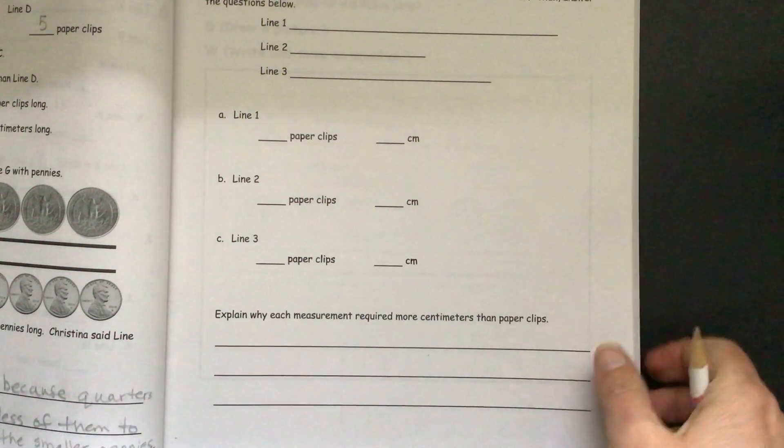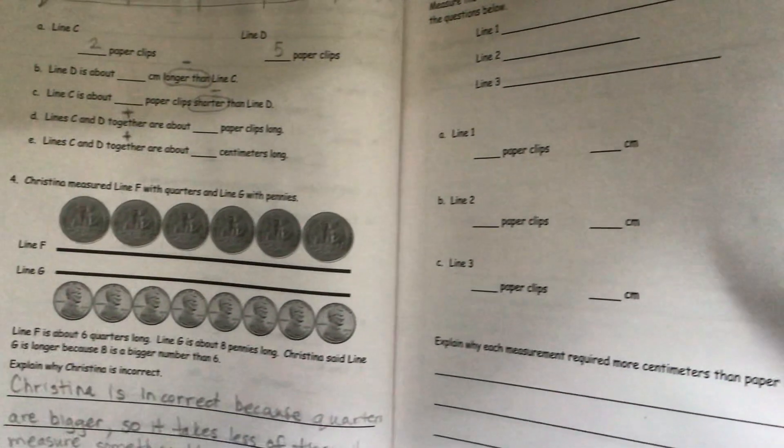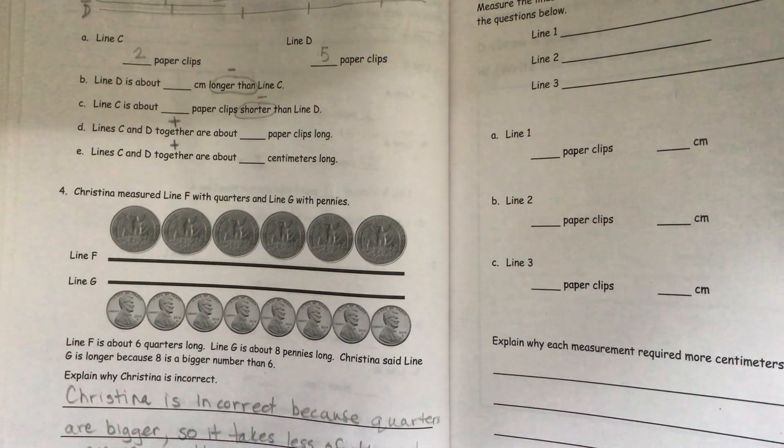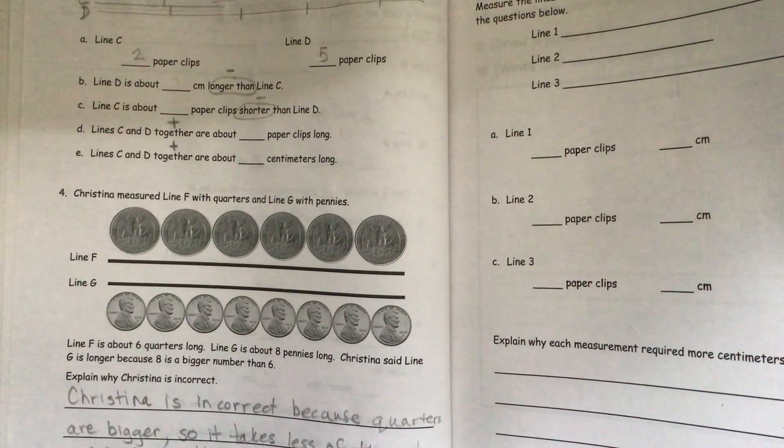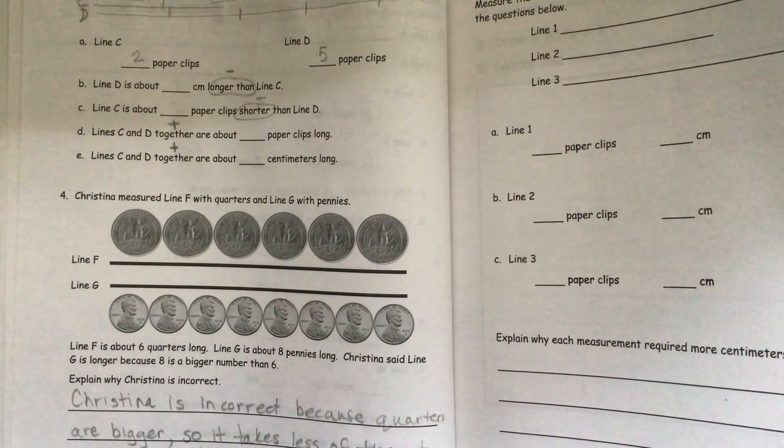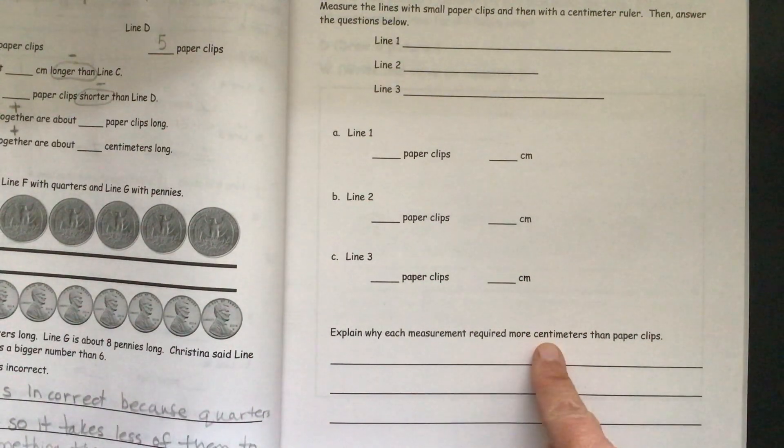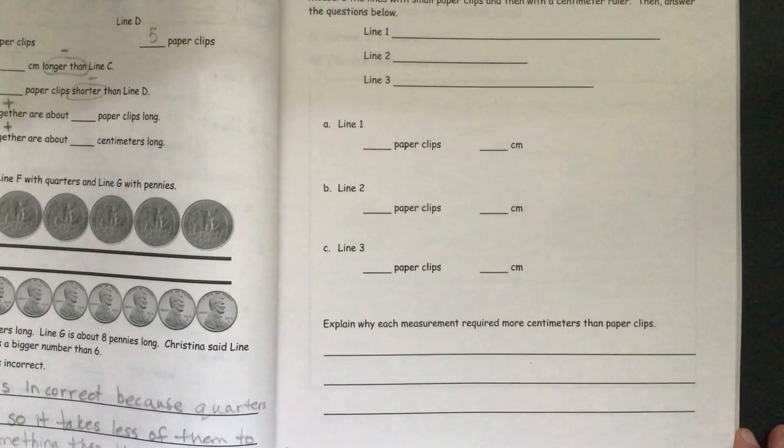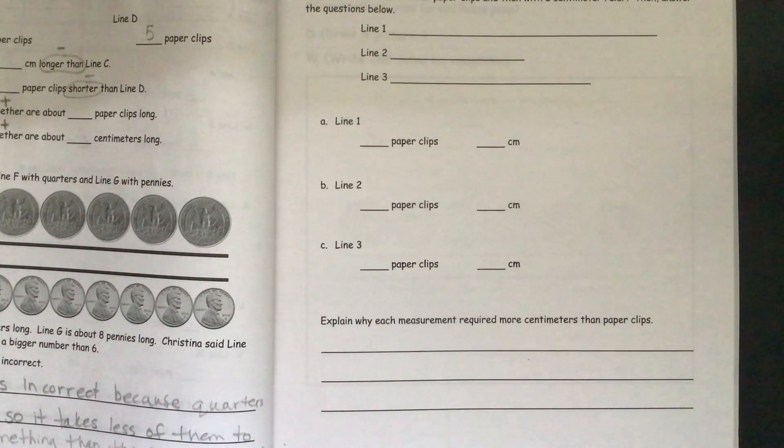So that goes back to the problem we just did like with the quarters and the pennies. Remember the quarters are larger. So it's going to take fewer of them to measure something than the smaller pennies. So you can think of that. Remember centimeters are smaller than the paper clips are. So I hope this helped.